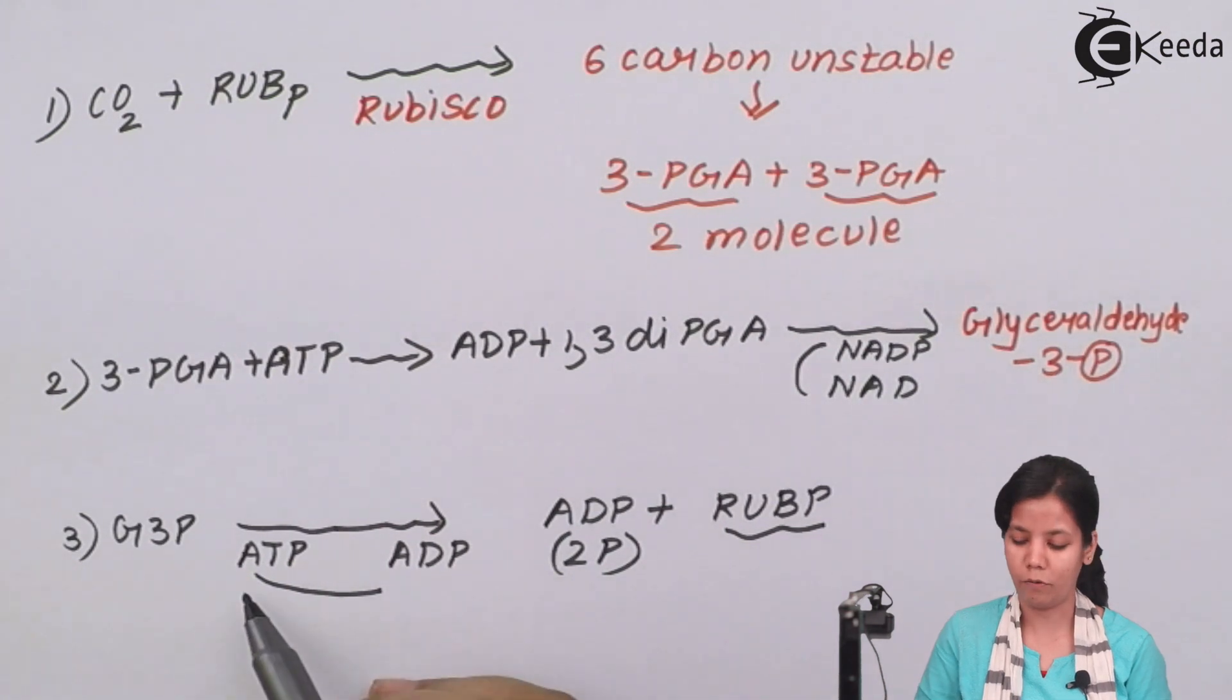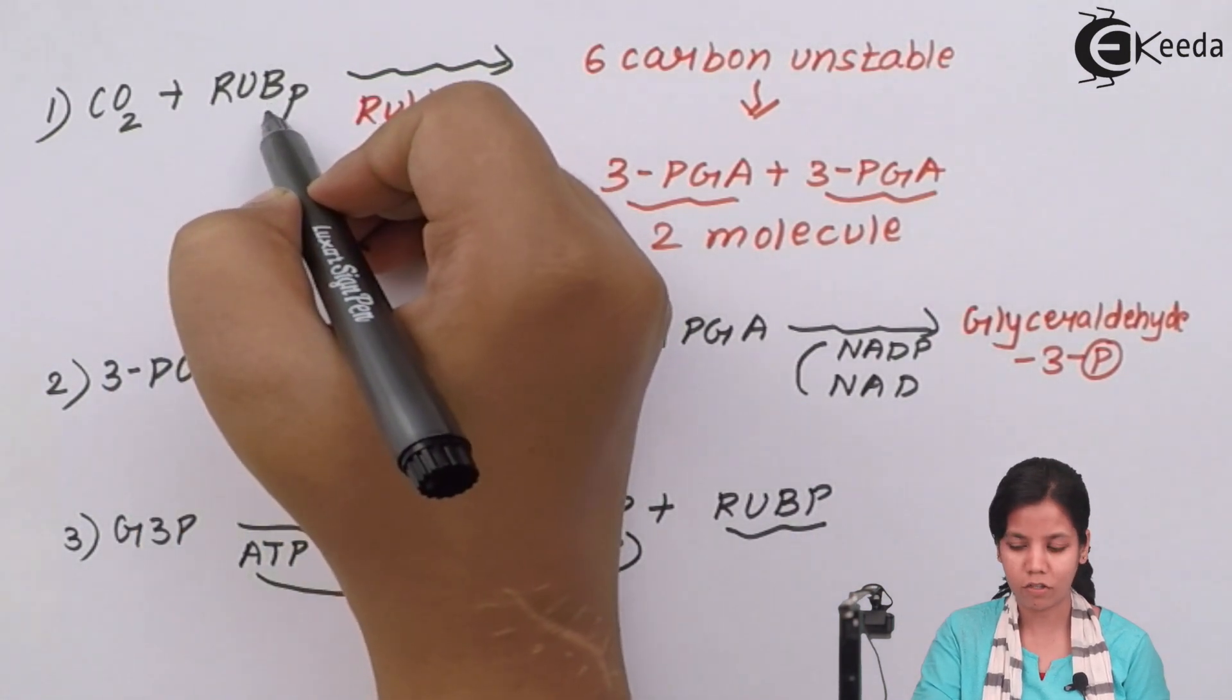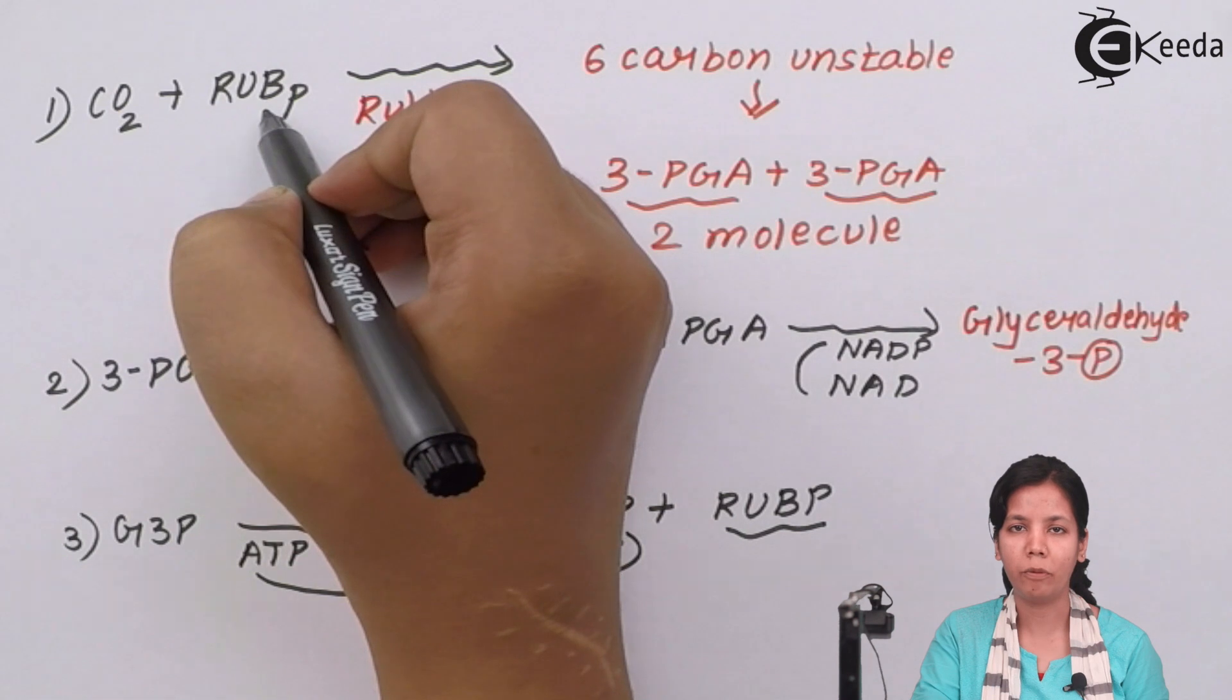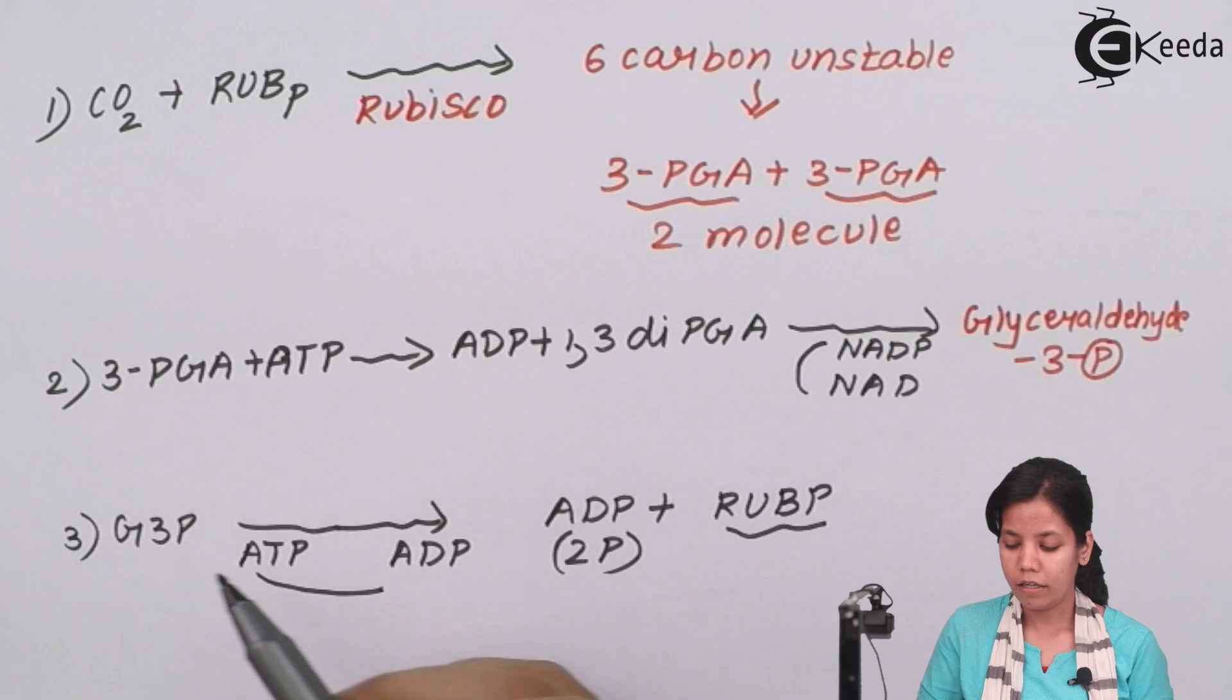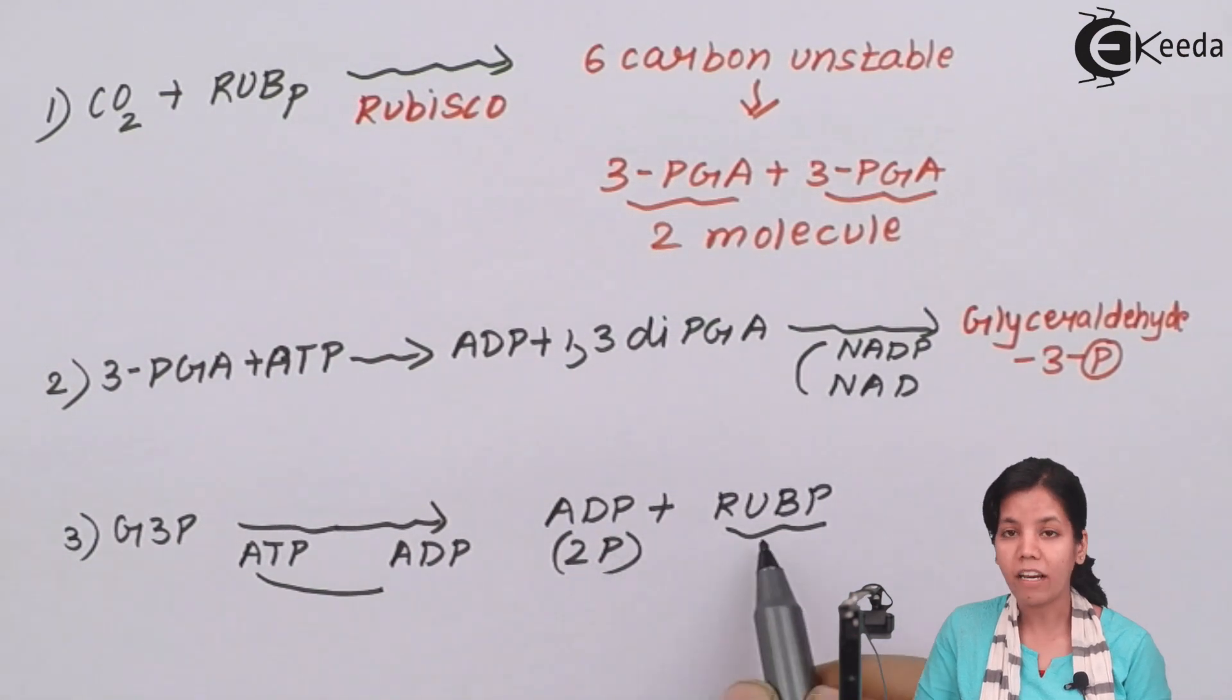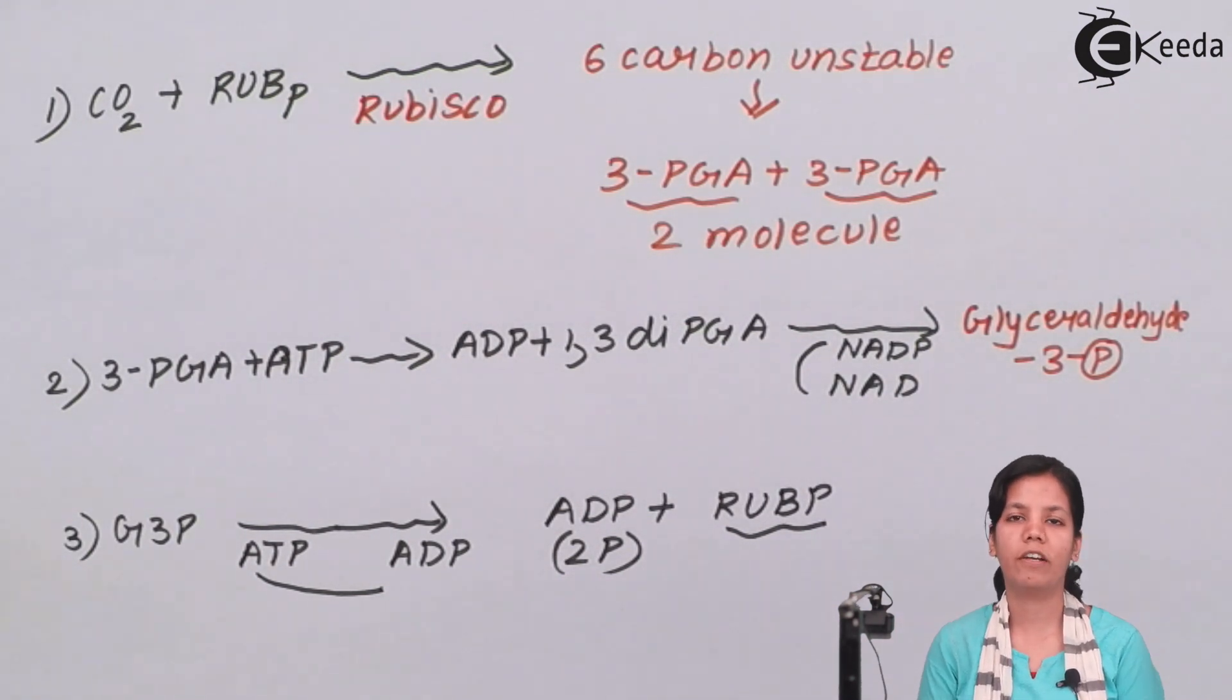And now comes the last part of the reaction which is regeneration. We all know that RUBP was used in the first reaction. So we have to get RUBP back. In this reaction G3P gets reduced and RUBP is formed basically RUBP is regenerated. So in the dark reaction or Kelvin cycle the RUBP which was initially used is regenerated back. We get back RUBP and Kelvin cycle goes on continuously.